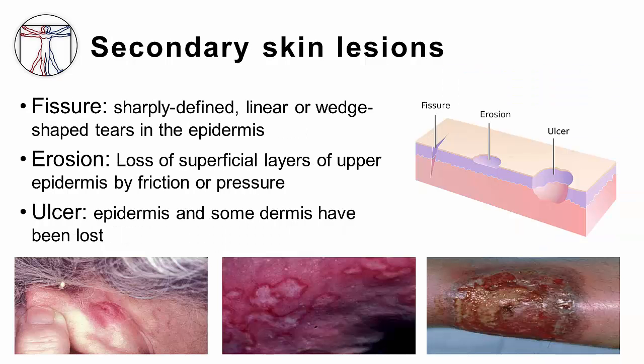A fissure is a linear cleavage of skin which extends through the epidermis and into the dermis or deeper. It is often caused by repetitive trauma to the skin and may occur in association with other medical conditions. One example is Crohn's disease, an inflammatory bowel disorder that is associated with anal fissures.